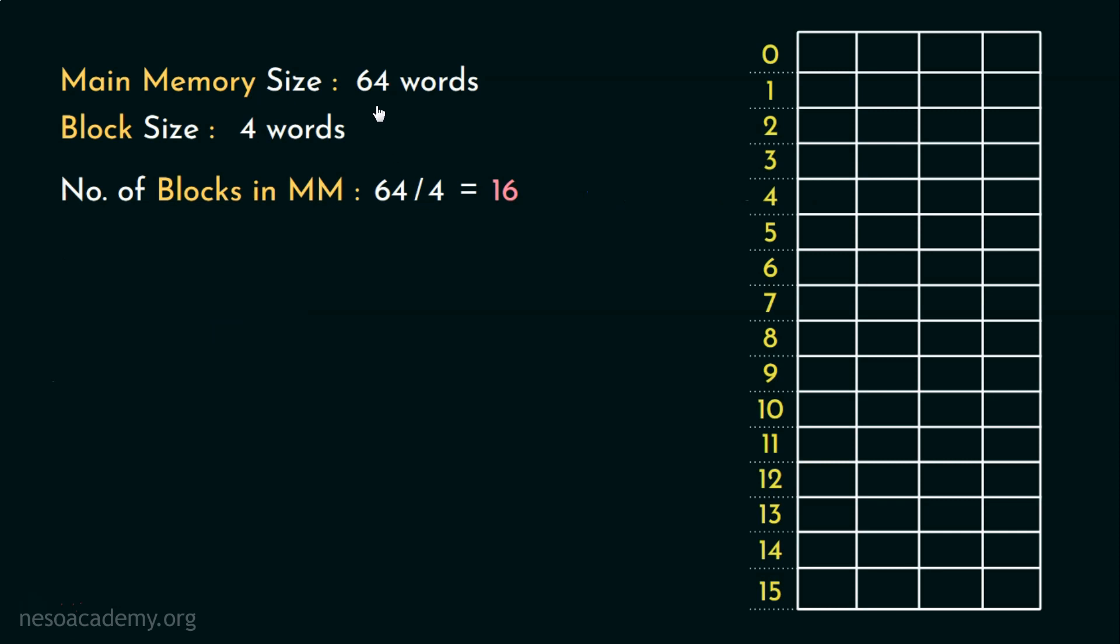Now, coming to these 64 main memory words, starting from 0 up until 63, they are organized in the main memory somewhat like this, because each and every memory block is supposed to have only 4 words.